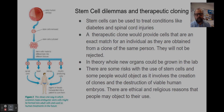Stem cells can be taken from adults from bone marrow, and those stem cells could be used to treat conditions like diabetes, in which case we'd want those stem cells to become the insulin-producing cells in a patient's pancreas. They could also be used to help treat spinal cord injuries, where we might want to produce cells that match up and create repairs to the nervous system.